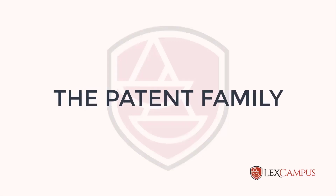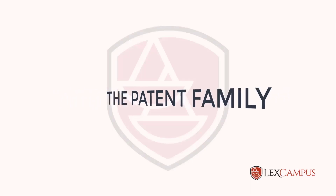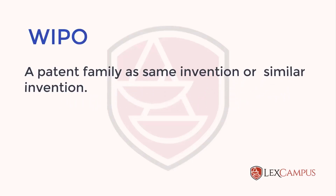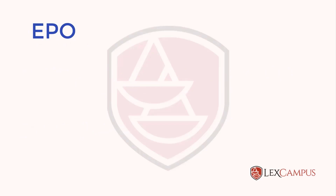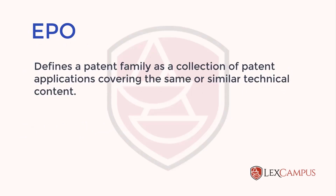The patent family — if you understand this language well, you can see documents from the WIPO which actually explain a patent family as the same invention or similar invention. That's one way to understand what is the same or substantially the same invention. If you look at patent families, the EPO defines a patent family as a collection of patent applications covering the same or similar technical content.